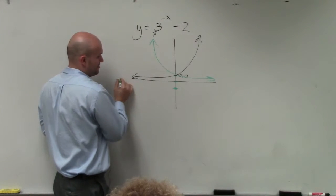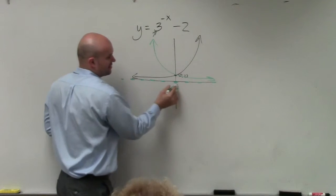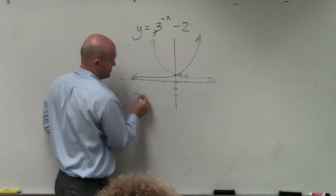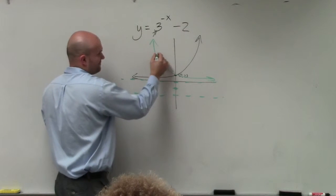Now, the other thing - remember, there's an asymptote here. So that asymptote is being shifted down 2 as well. So now the graph looks something like this.